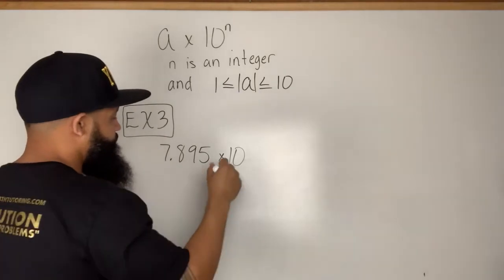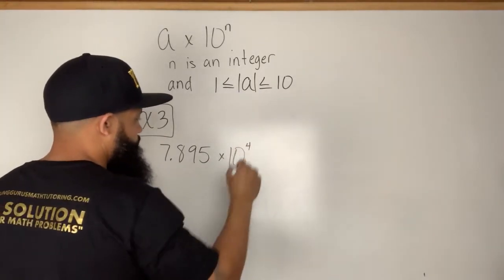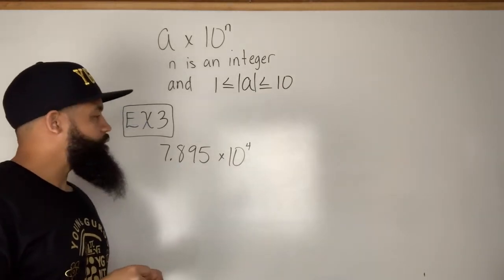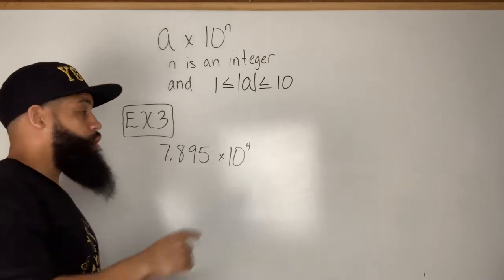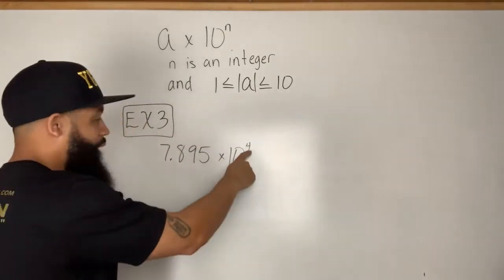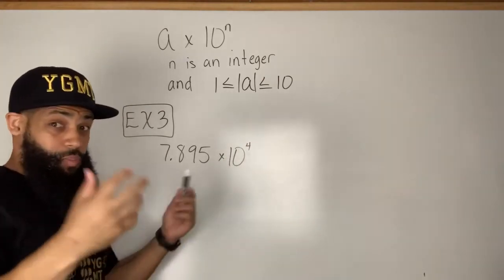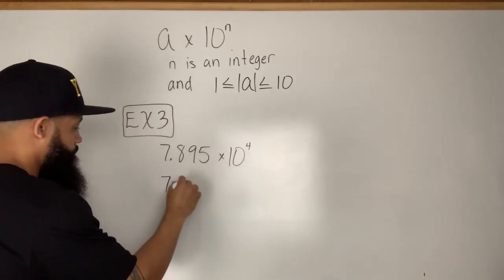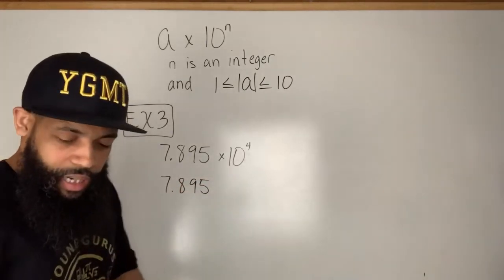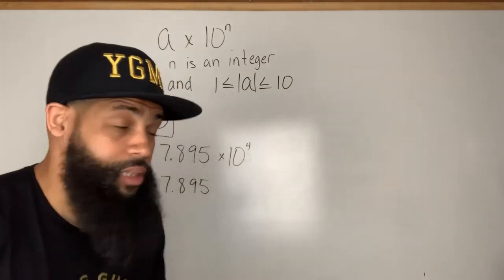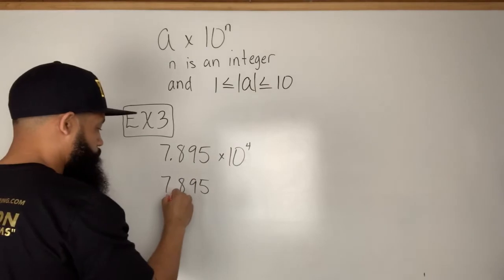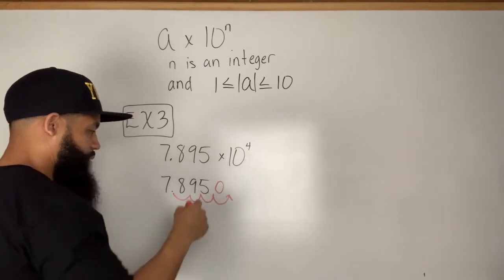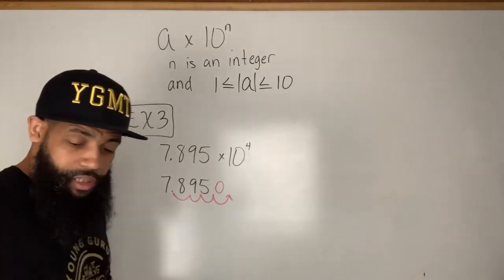Let's say I have 7.895 times 10 to the fourth power. The decimal is already there, but we need to move it four times to the right because it's a positive exponent — 10 to the fourth power is much greater than 10. So I rewrite 7.895 and move the decimal to the right four places: one, two, three, four.